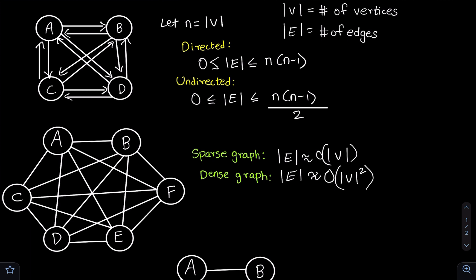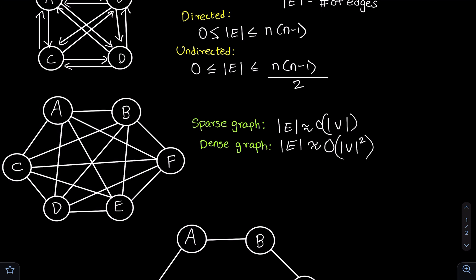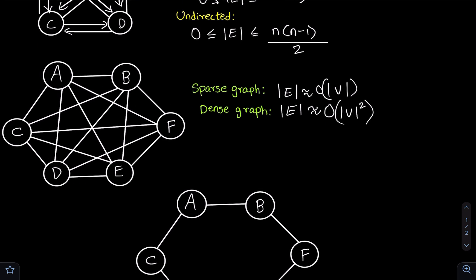This is also a good example of a dense directed graph. In general, a dense graph is a graph which has a lot of edges — typically in the order of the number of vertices squared. Thank you all for watching this video and I hope to see you all in the next video.